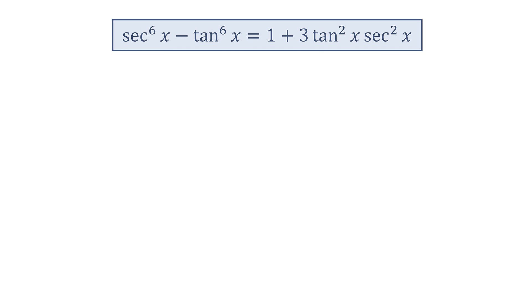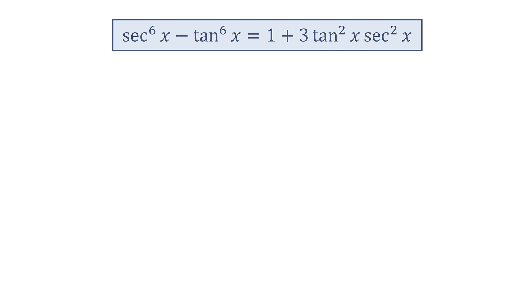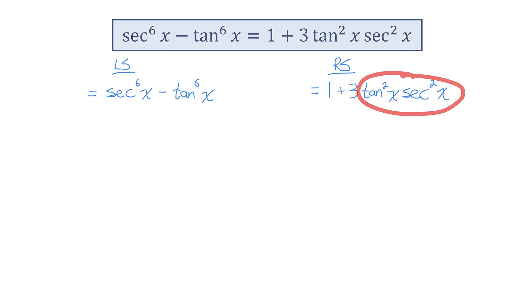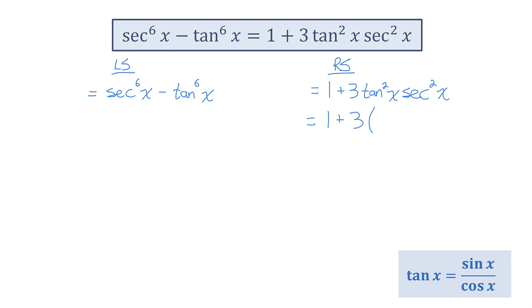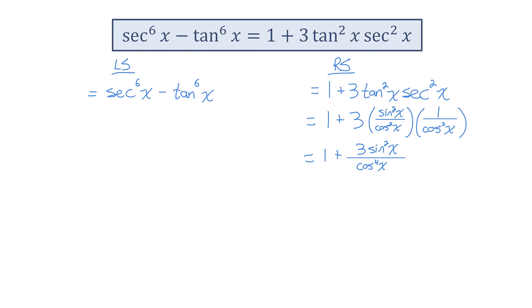And here's the final identity, identity number 11. Let me separate into left and right side. I'm going to start by rewriting this product of tan squared times secant squared. Tan squared, by the quotient identity, is sine squared x divided by cosine squared x, and secant squared by the reciprocal identity is 1 over cosine squared x. The product of those three factors is 3 sine squared x over cosine to the power of 4 of x. Moving to the left side, I notice I have a difference of cubes. I'll rewrite secant to the power of 6 of x as secant squared x being cubed, minus tan squared x being cubed — a difference of two perfect cube values.